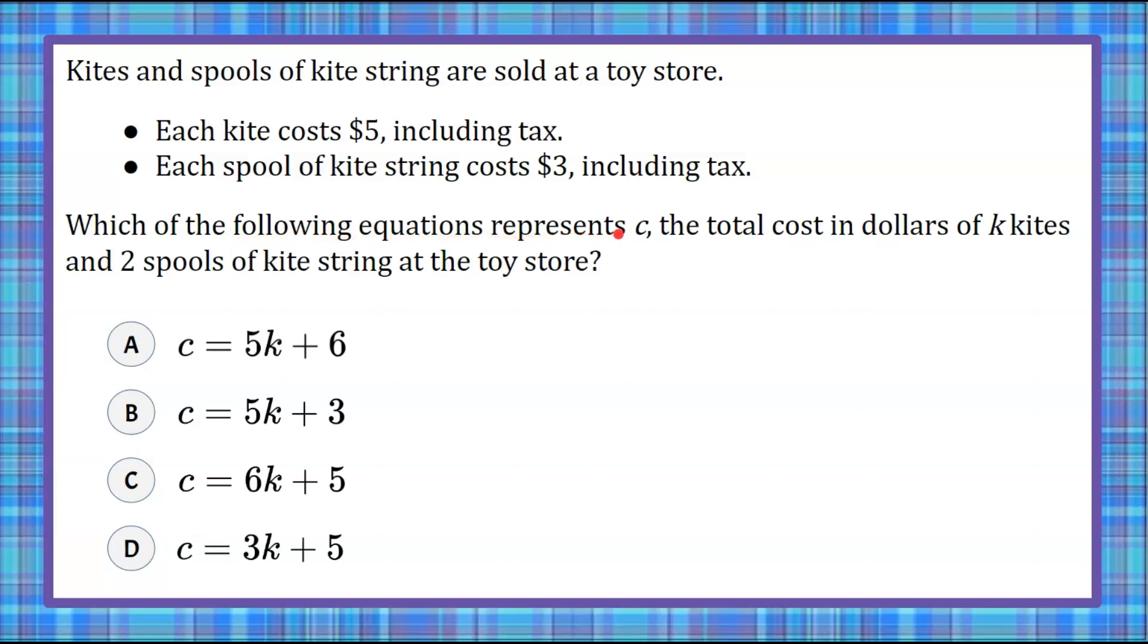We're asked which of the following equations. So we know that c is the total cost. That means c is going to equal k kites and two spools of kite string. So we're going to have our total cost equal to the number of kites we buy plus two spools of kite string. So let's fill this in.